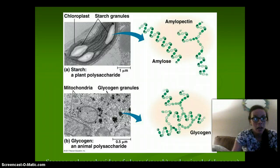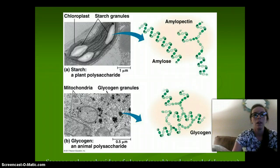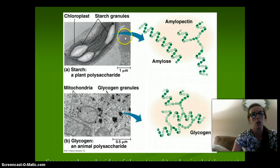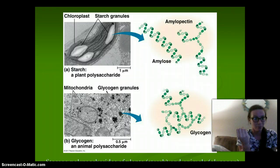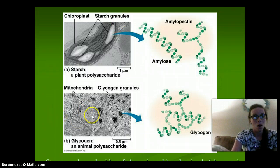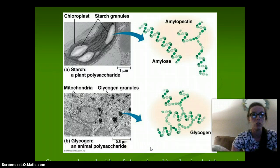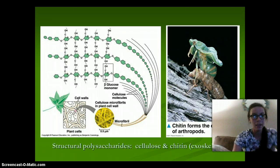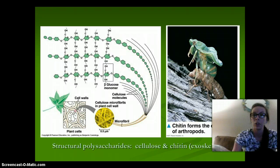The difference between starch and glycogen — which are the polymers of carbohydrates — and their function: starch is stored in the chloroplast due to photosynthesis, which converts solar energy, water, and carbon dioxide into sugar. The animal polysaccharide is called glycogen, and the purpose of these polysaccharides is to store energy. Structural polysaccharides are cellulose and chitin, which is the exoskeleton of arthropods.